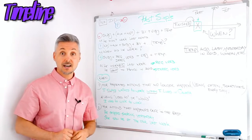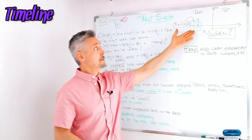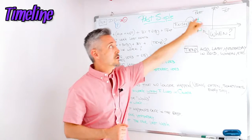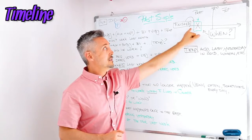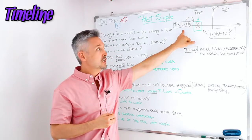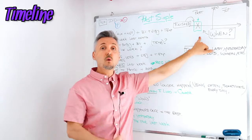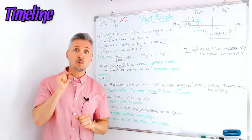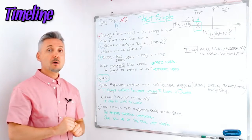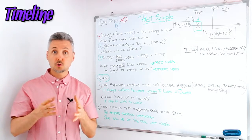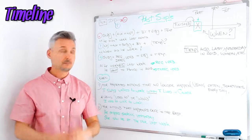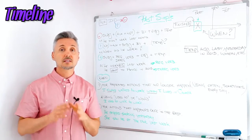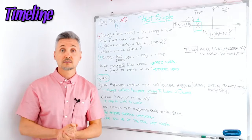Now let's look at the timeline. We see the past simple in the past part of the timeline. It's a finished action and you know when it happened — it's very important that you know when it happened. We use the auxiliary 'to do' in the past, so 'did.' We use the auxiliary only for negative sentences and interrogative sentences.